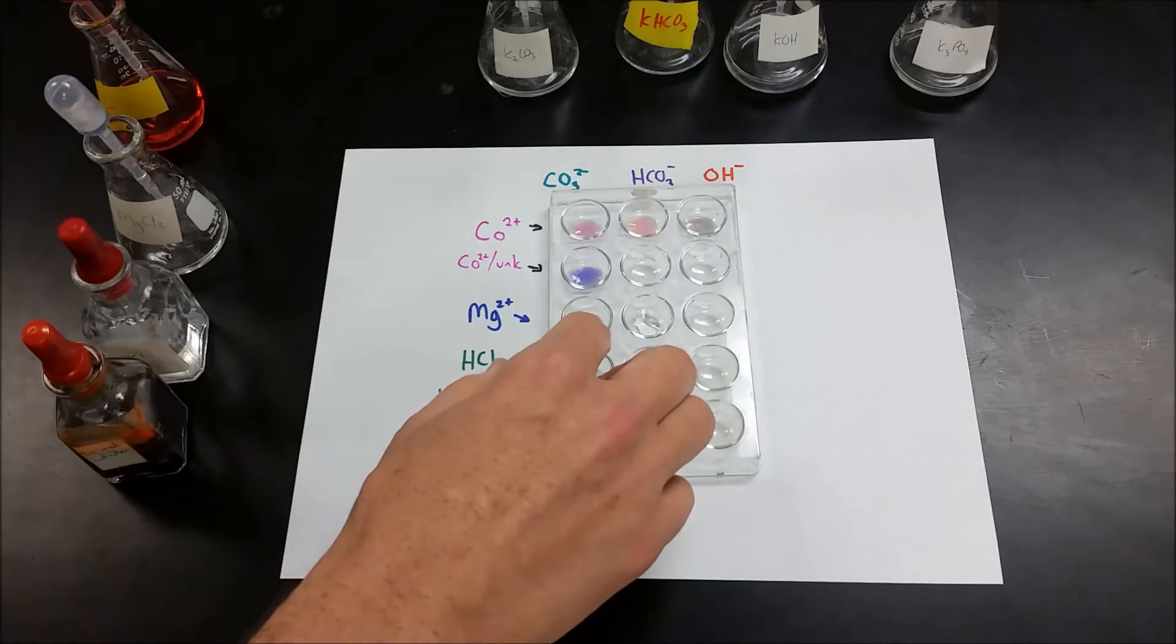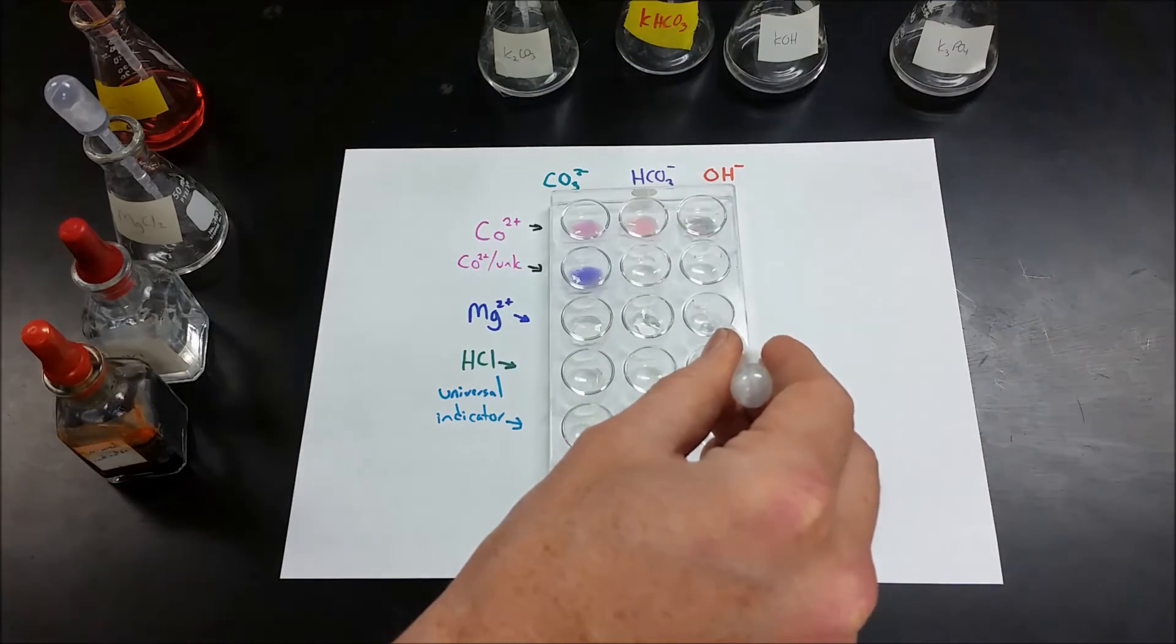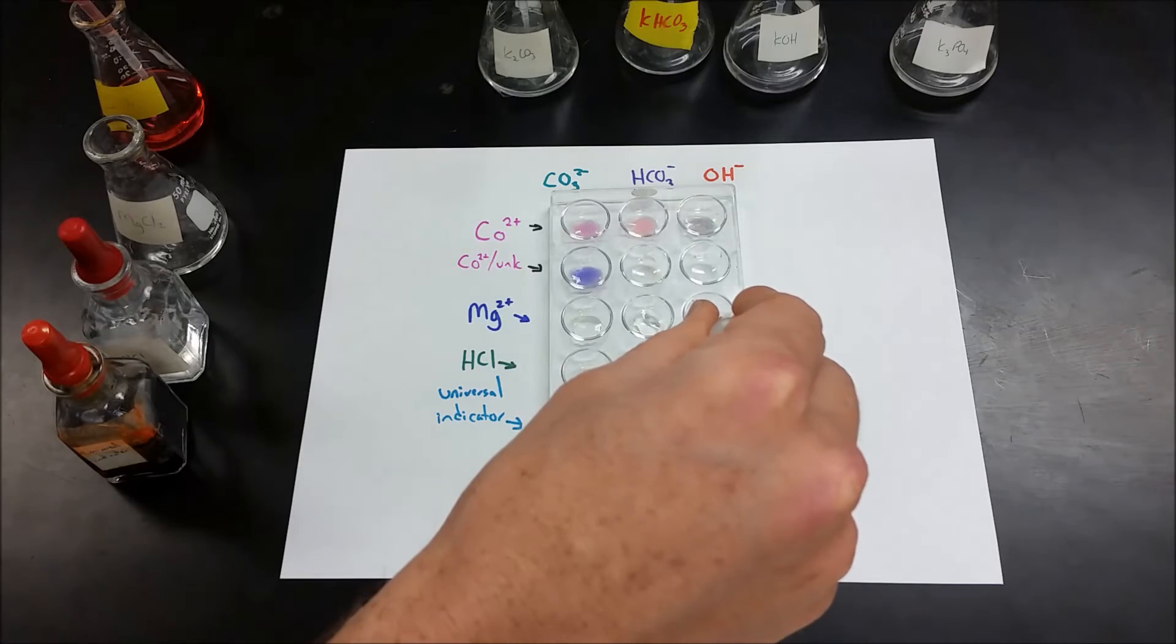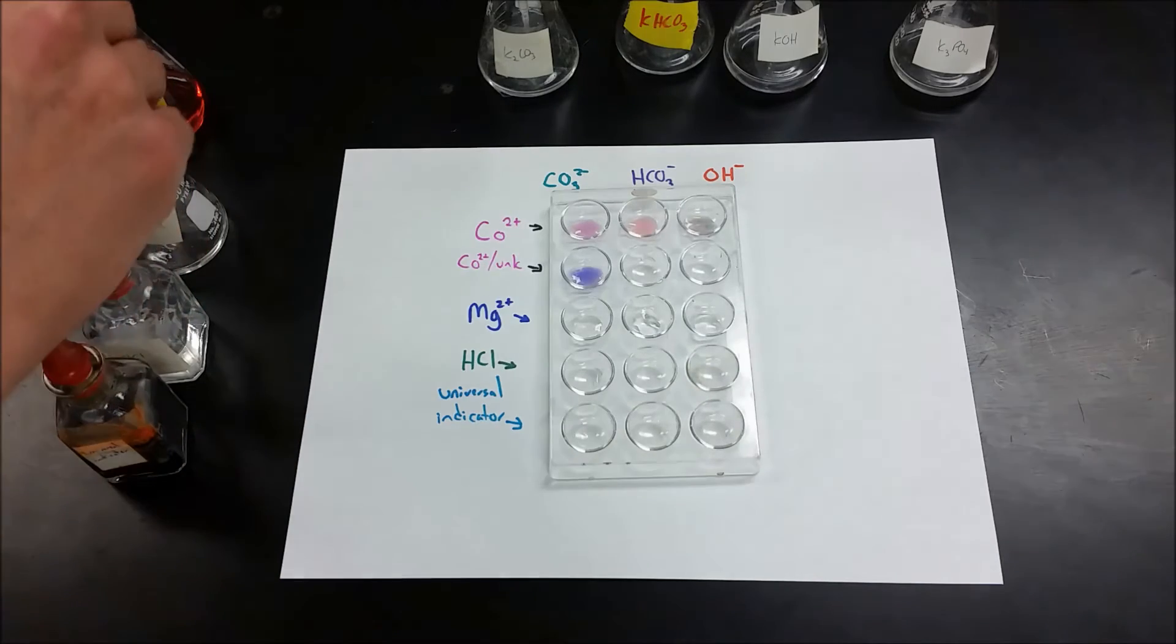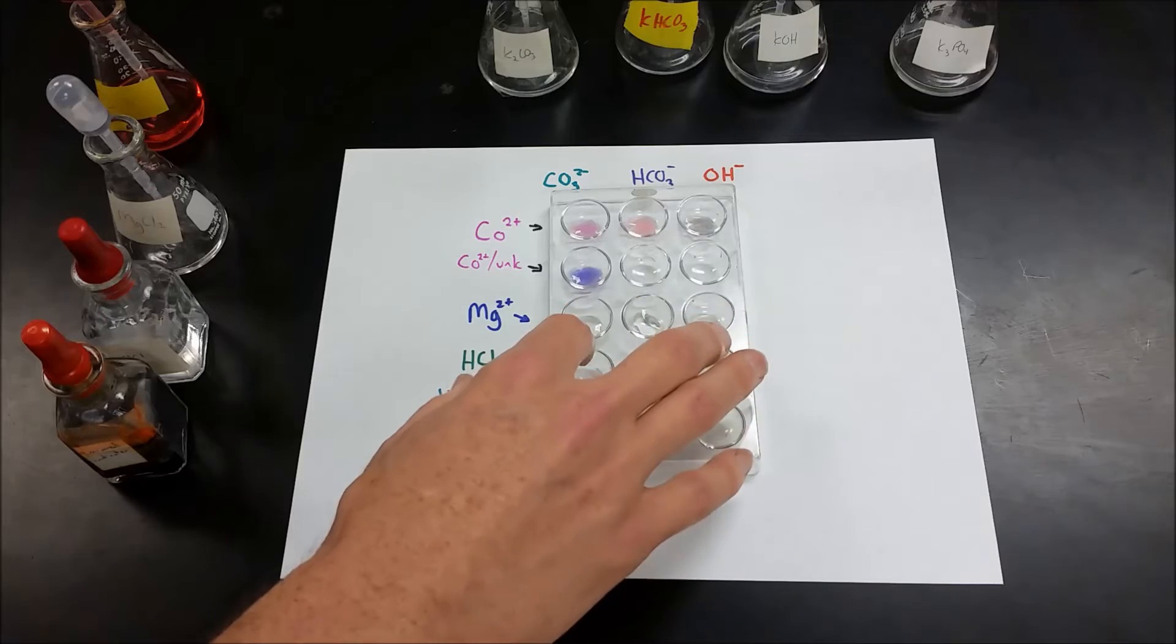And what we find is we will form a precipitate for one, but not the other. Now, if we had done the hydroxide and continued on testing, we would match one of those results. So we have to start with that cobalt test to make sure that we don't fall into a trap where we confuse the hydroxide and the carbonate.